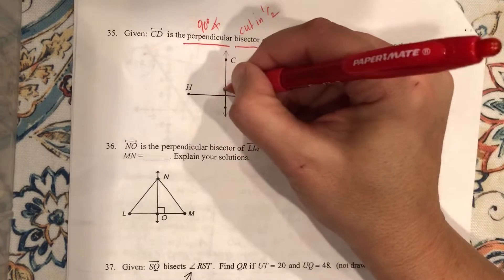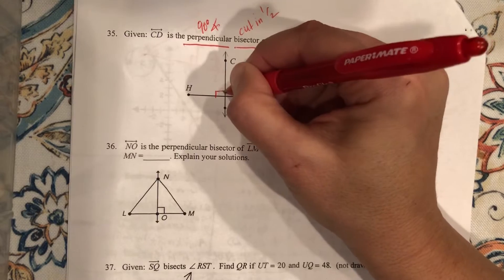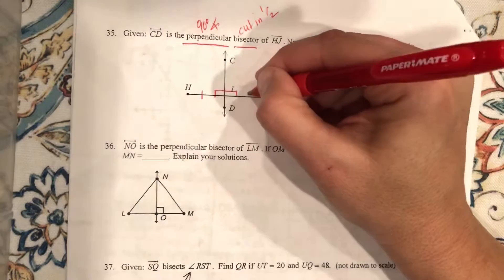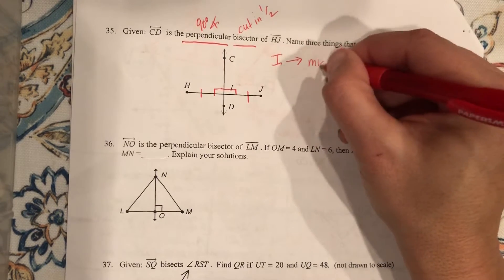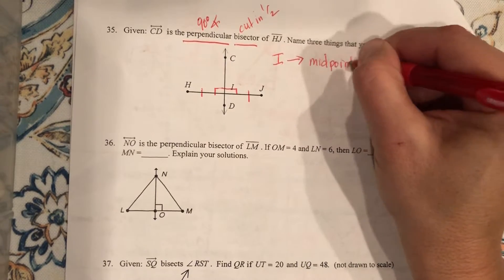We've talked about that. So I've got the 90-degree angle, cut in half, which means I is the midpoint. We've talked about this a bunch. I is the midpoint.